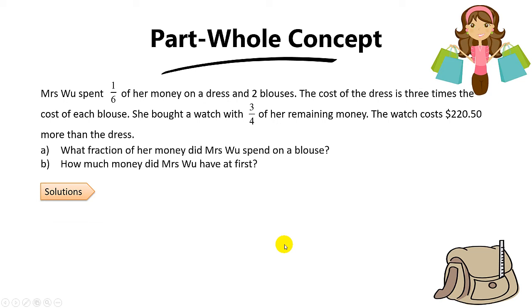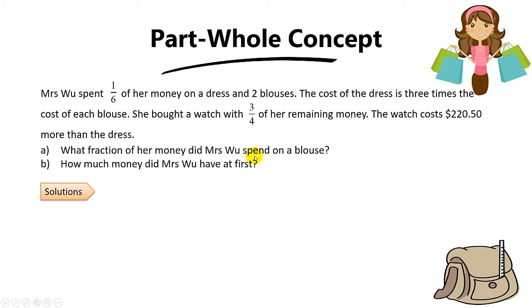Welcome back. We are going to explore one more question from the PSLE 2020 math paper. This is probably one of the hardest questions in the paper — question 17 of paper 2, which is the last question. This question is testing on the part-whole concept, which is a very common concept in fractions word problems. Mrs Wu spent 1 out of 6 of her money on a dress and 2 blouses. They asked what fraction of her money did Mrs Wu spend on each blouse.